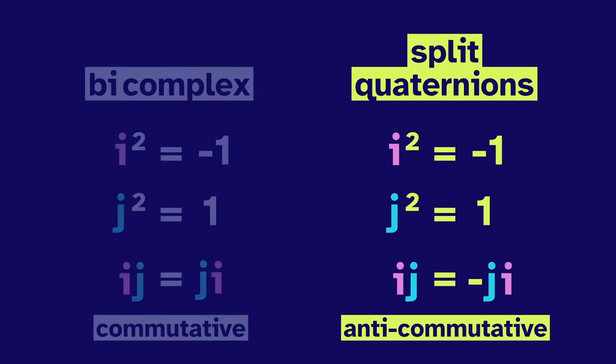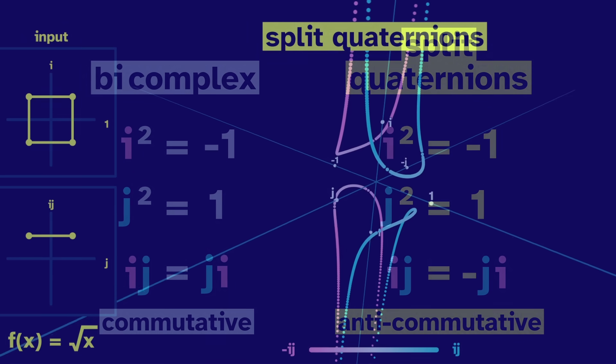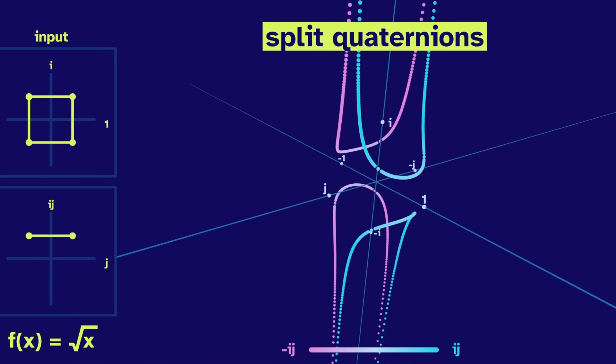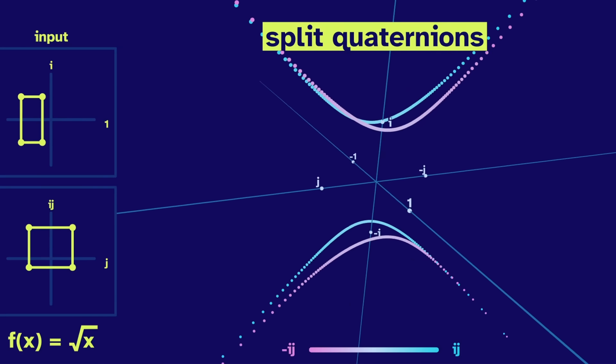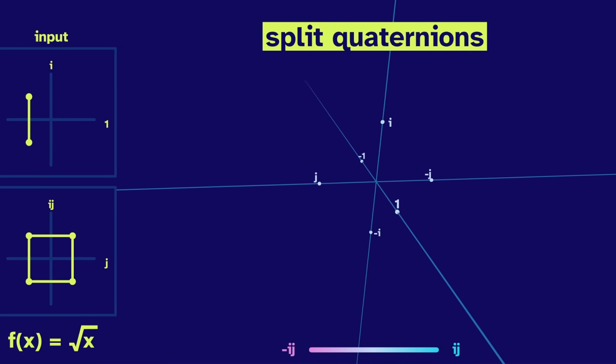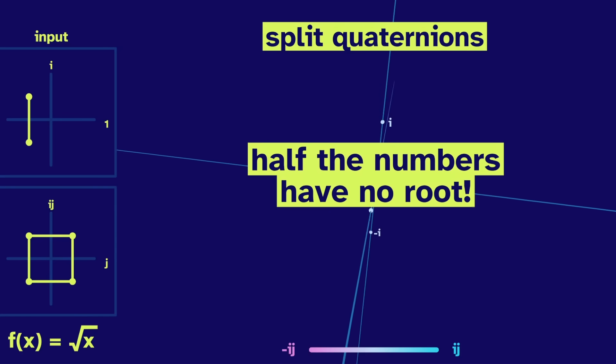So now let's compare the roots in these systems. Here's a cube root in the split quaternions. Let's spin the cube. Cool. Another spin. Oh no, it disappeared! We spun it out of the root zone. Half of the numbers have no root.